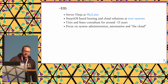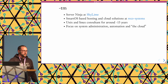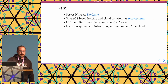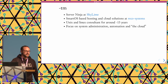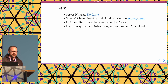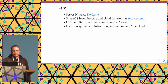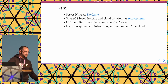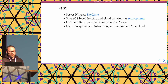About myself: I'm Thomas. I more or less work as a server ninja for Skyline. We provide SmartOS-based hosting and cloud solutions. I've been doing Unix and Linux consultancy for around 15 years, focusing on system administration, automation, and the cloud. Maybe interesting for people thinking about Solaris — I did not start with a Solaris background. I came from Linux to SmartOS.